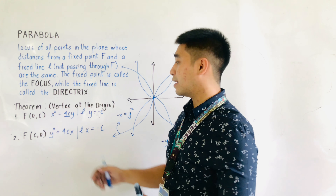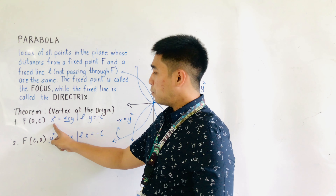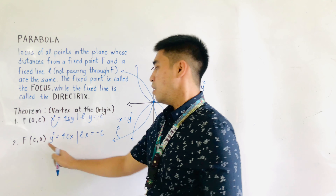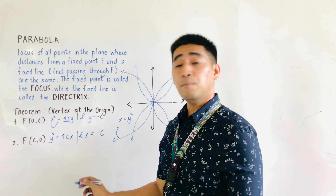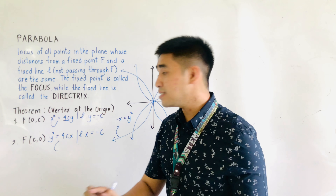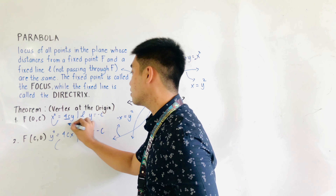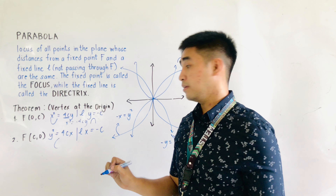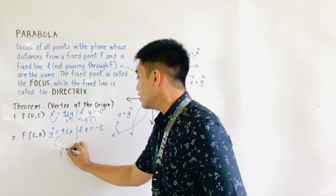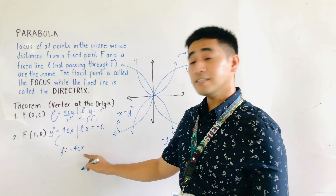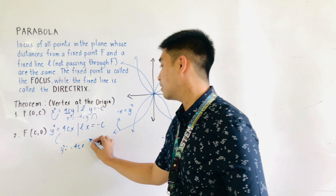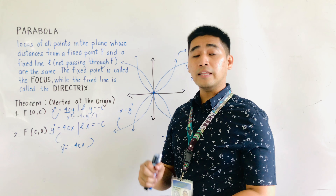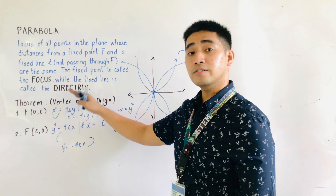This will be the formula we use to identify the standard equation of the parabola with vertex at the origin. If x squared is equal to 4cy, the parabola is opening upward. If y squared is equal to 4cx, the parabola is opening to the right. If x squared is equal to negative 4cy, it opens downward. And if y squared is equal to negative 4cx, the parabola opens to the left.